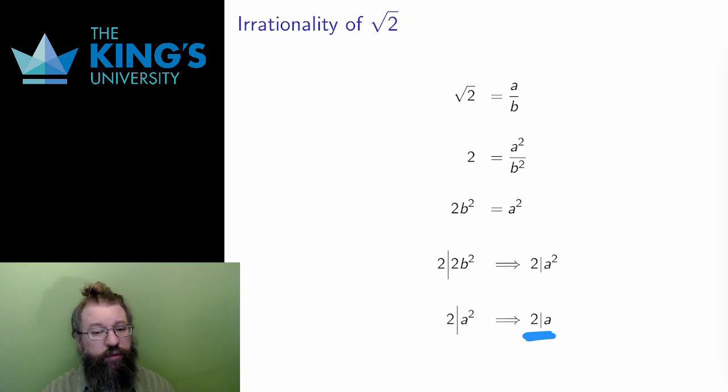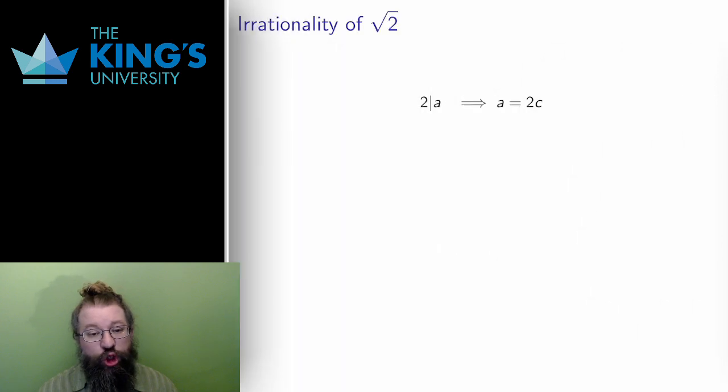So now I know that a is even. That means that I can write a as 2 times something. That's what even means. So I can write a as 2c for some other whole number c. But then I can put this back in the equation, replacing a with 2c. I do some more algebra, squaring both terms on the right, and then dividing by 2.